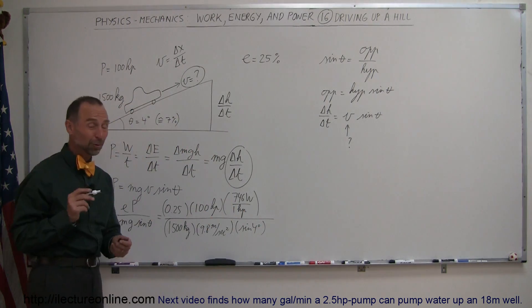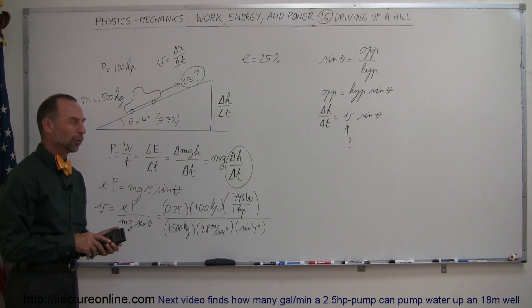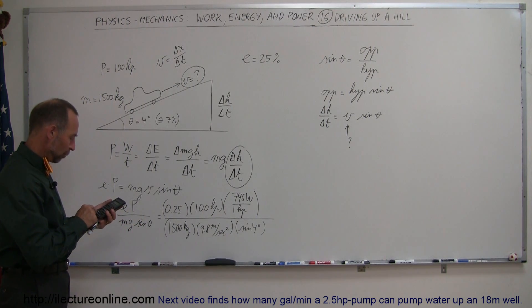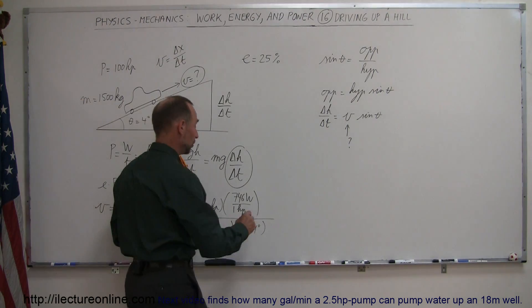And that would be the maximum speed this car can drive, since the engine only can put out 100 horsepower, 25% of that, which is usable. So 0.25 times 100, times 746, divided by 1500, divided by 9.8, and divided by the sine of four degrees, and we get 18.2 meters per second.